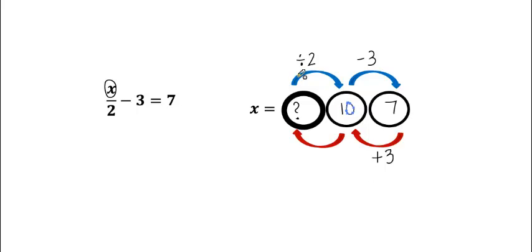Next, the opposite of dividing by 2 is multiplying by 2. So now we know what x is equal to. We no longer have this unknown, or this question mark. x is equal to 20.